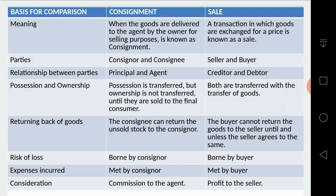In consignment, possession is transferred but ownership is not transferred until the goods are sold to the final consumer. When the consigner sends goods to the consignee, only possession transfers — ownership stays with the consigner until the goods are sold to the final customer. In sale, however, both possession and ownership transfer from the seller to the buyer upon completion of the sale transaction.